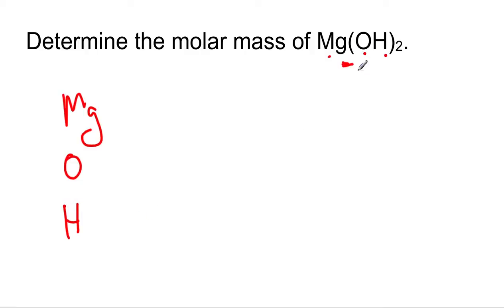Now you look at the little subscripts that are after each element. Magnesium has nothing there, so we assume it's just a 1. The O has nothing there, so we assume inside the parentheses there's a 1. However, there's a 2 outside the parentheses, so 1 and 1.